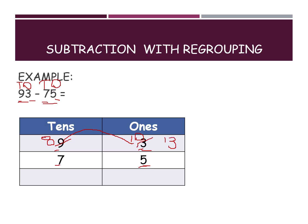Now we can do 13 minus 5. Keep 13 in your mind and open 5 fingers, counting backward: 12, 11, 10, 9, 8. So 13 minus 5 equals 8.